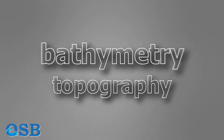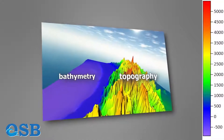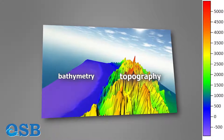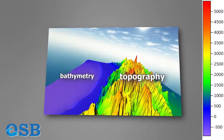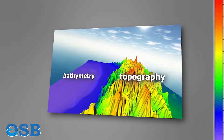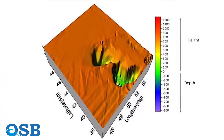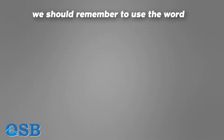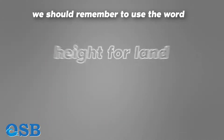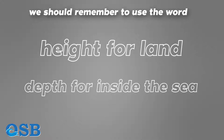Based on this level, we can define bathymetry and topography. Generally, we determine the elevation of landforms above sea level using topographic maps — for example, the map of a mountain. Bathymetric maps show depths of landforms below sea level. Here we concentrate on the bathymetry as we try to monitor the bottom of the Caspian Sea. We should remember to use the word 'height' for land and 'depth' for inside the sea.